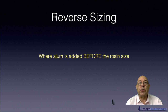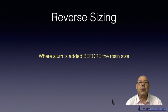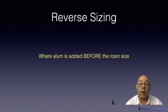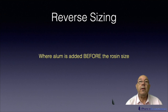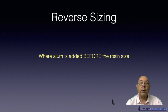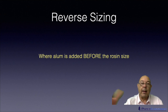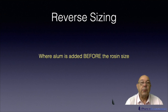Then we've got reverse sizing — another strange term that's not what it sounds like. Reverse sizing applies only to rosin alum systems. In the normal way of producing rosin alum sized paper, first you put the rosin in, and then later down the pipeline you add the aluminium in whatever form — aluminium sulfate, PAC, or sodium aluminate.